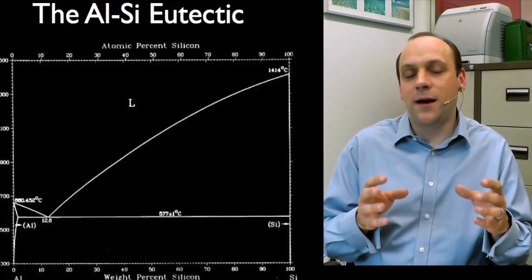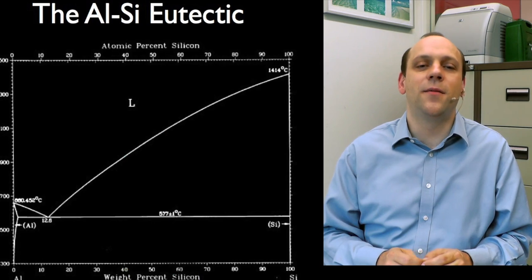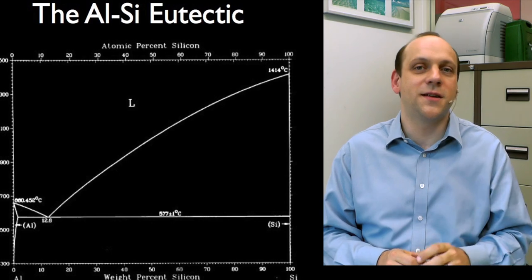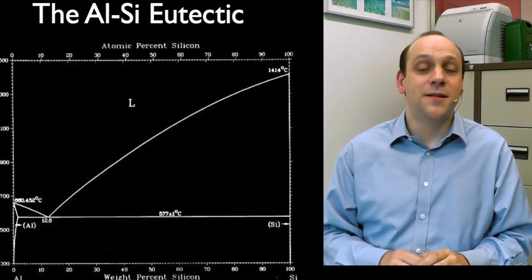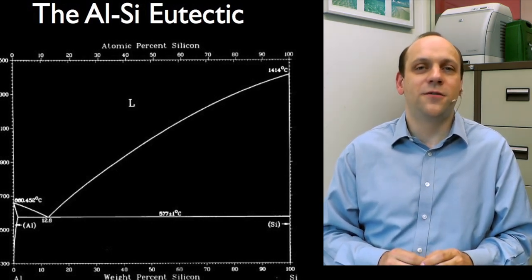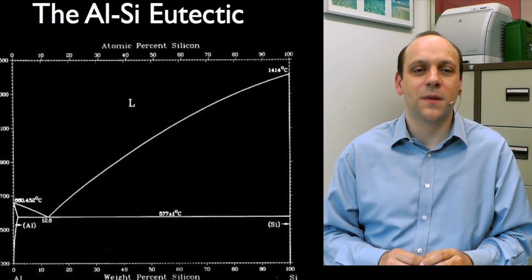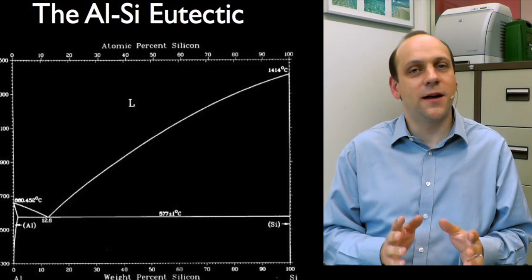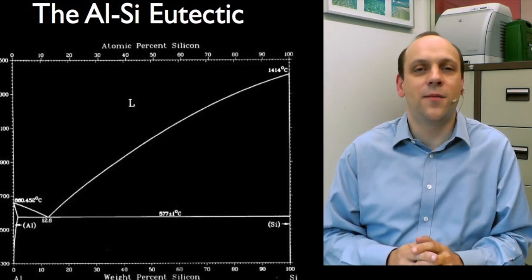Let's look at a couple of other examples. This is the aluminium-silicon eutectic diagram. And you see you've got an aluminium phase. Aluminium melts at quite a low temperature, 660 degrees C. And silicon melts at an enormous temperature, 1400 degrees C.